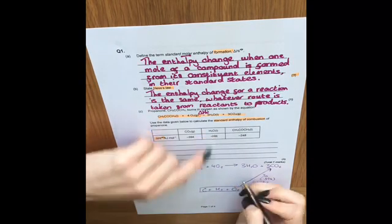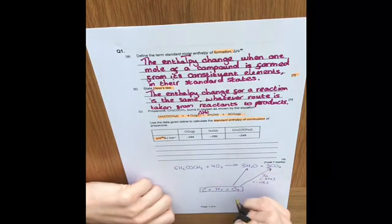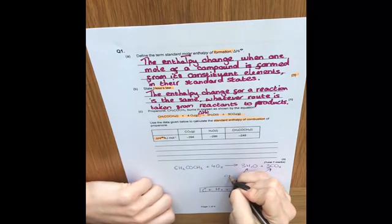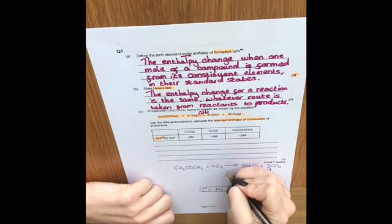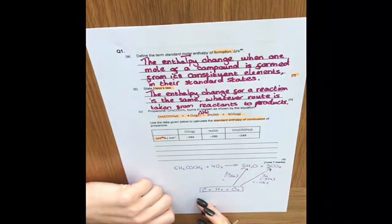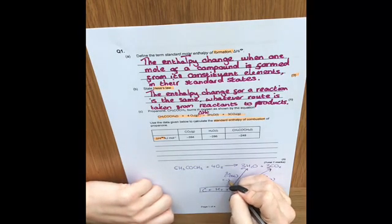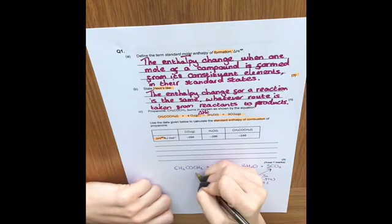So next value is for water. Again, standard enthalpy of formation, so going up from hydrogen and oxygen to water. That is -286, but obviously again we've got three moles of that, so we're going to multiply that by three. Put that into our calculator, we get -858.